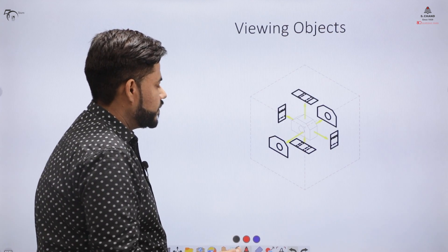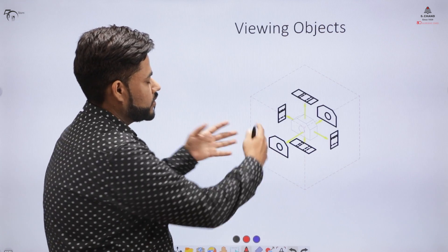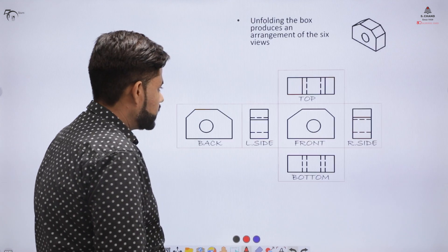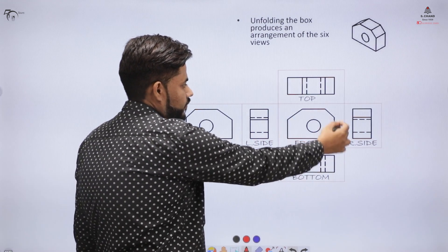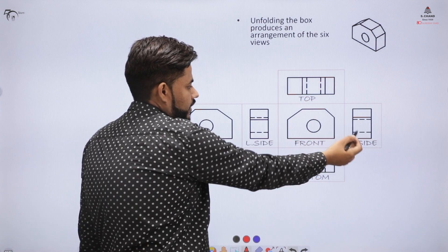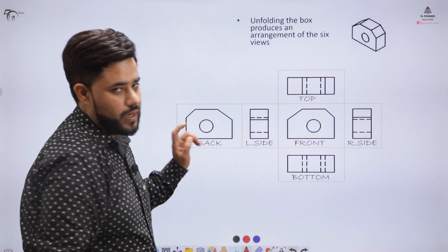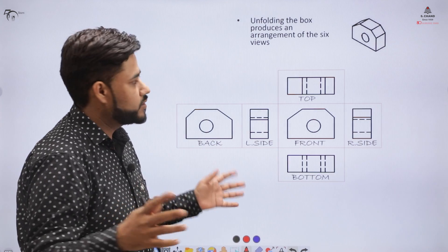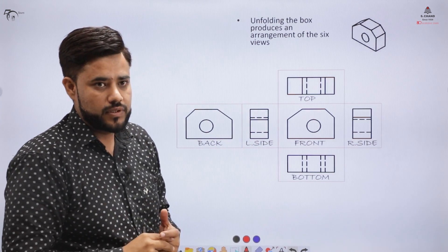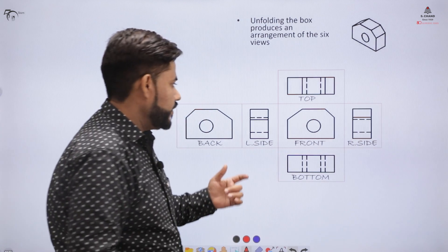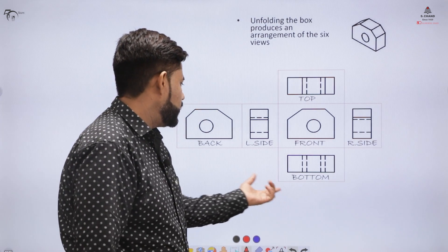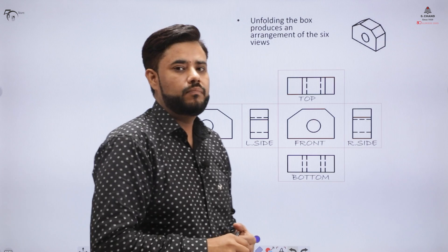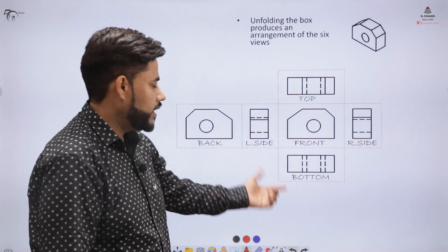How do we interpret these views? We open this box so that the different views appear laid out. When we open that box, we get the front view, the top, the bottom, the right side view, the left side view, and also the back view. These are the 6 views obtained by unfolding the box. However, generally we don't use the bottom view or the back view in majority of drawings, unless stated or unless the part is really complex.